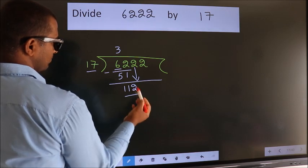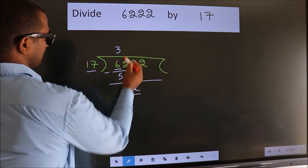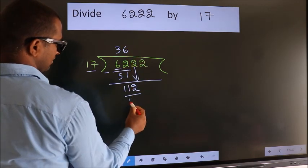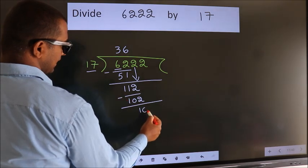So 112. A number close to 112 in 17 table is 17 times 6, 102. Now we subtract. We get 10.